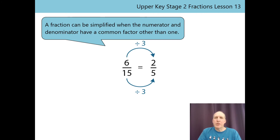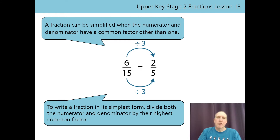Here is a generalisation that we can use: a fraction can be simplified when the numerator and denominator have a common factor other than 1. I'd like you to say it now — pause the video while you say it. Here's another that will help us: to write a fraction in its simplest form, divide both the numerator and denominator by the highest common factor. Can you say it now? Pause the video again. Where have we written the highest common factor? It's the number that we're dividing both the numerator and denominator by.